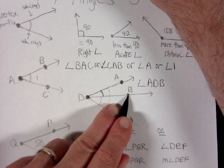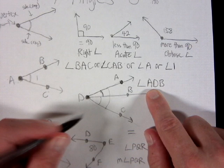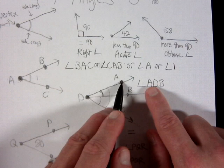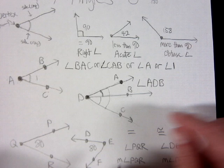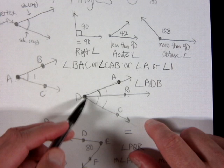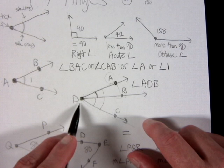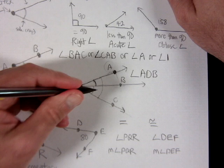You could also reverse that: angle BDA is the same angle. Notice that when you read the angle — A, D, B — it actually traces the angle for you. If it doesn't trace the angle you want, you didn't name it correctly. For example, angle DAB is not correct because D is the vertex and must be the middle letter.